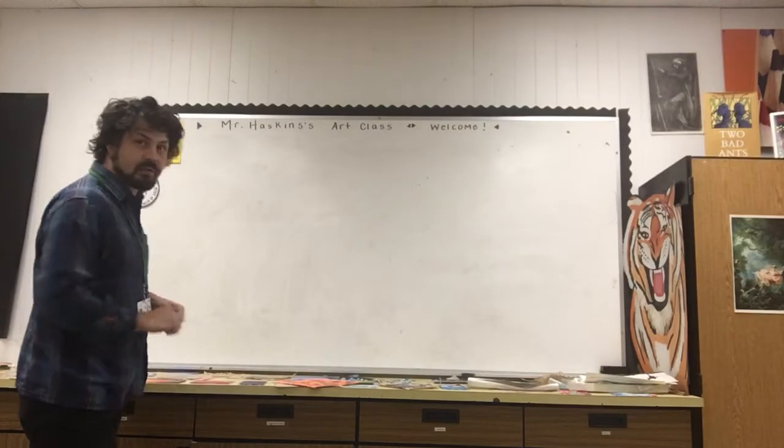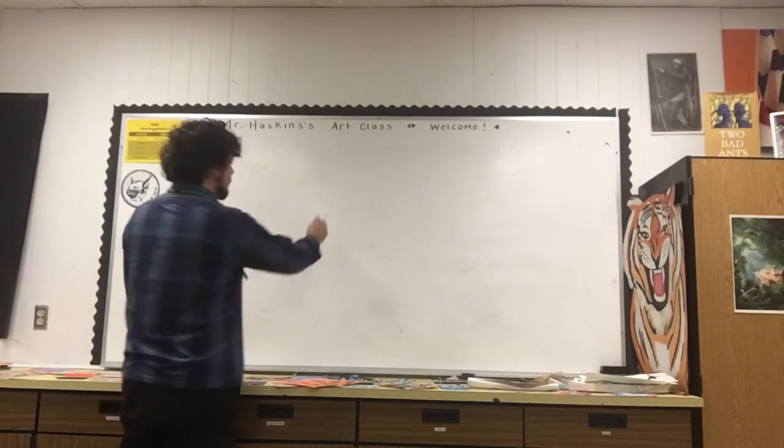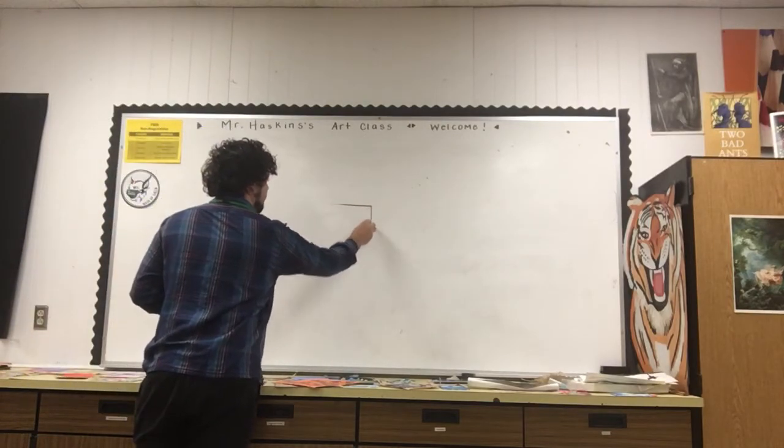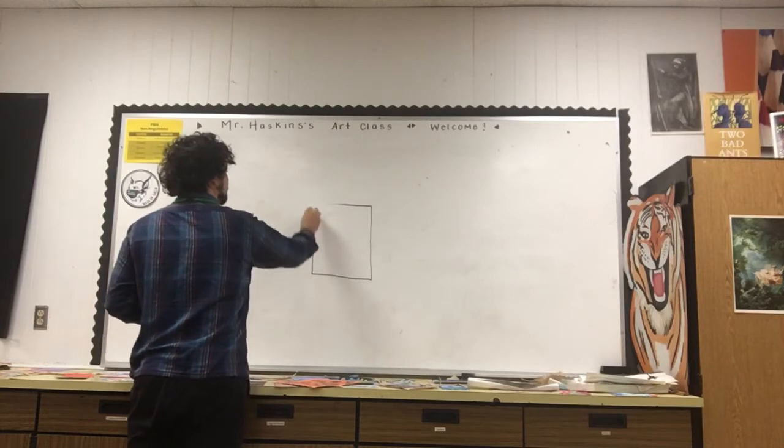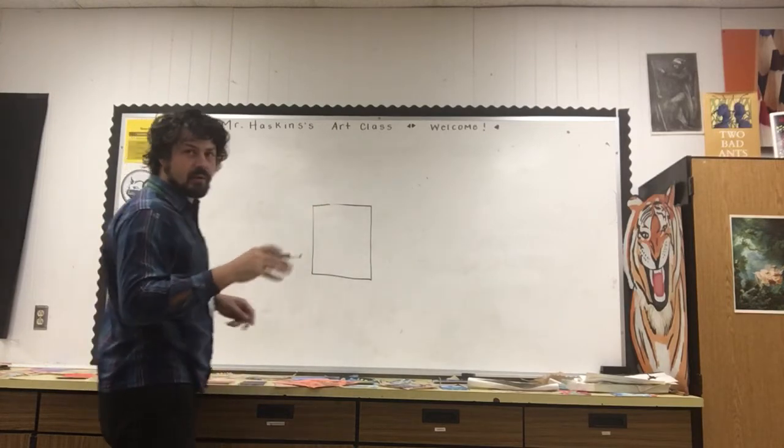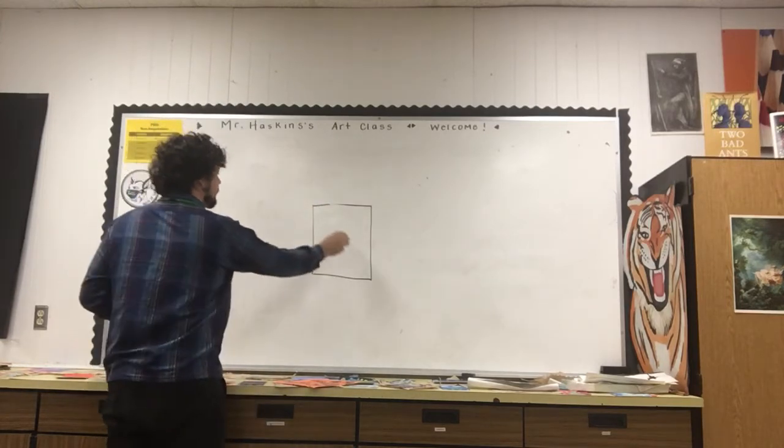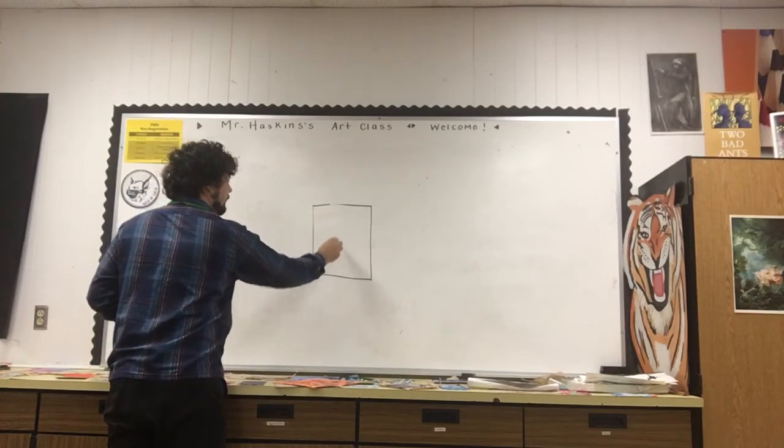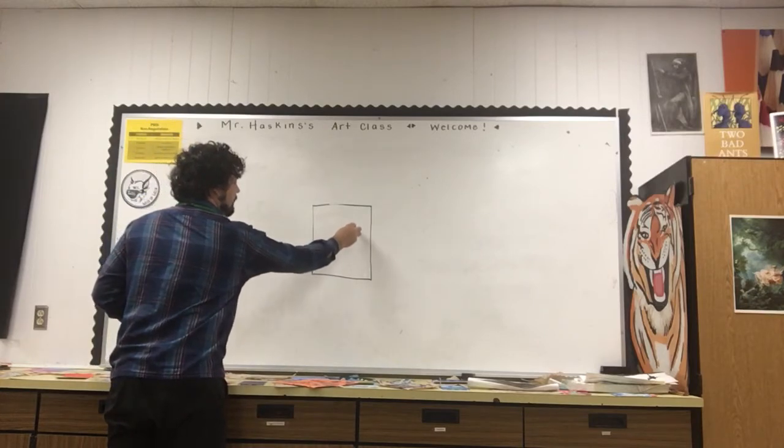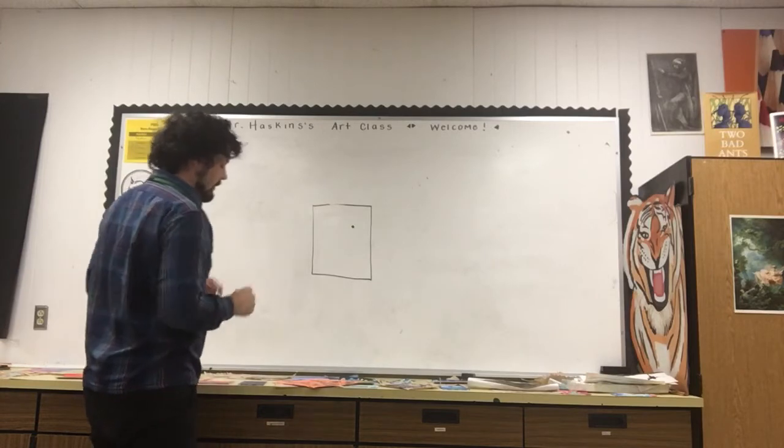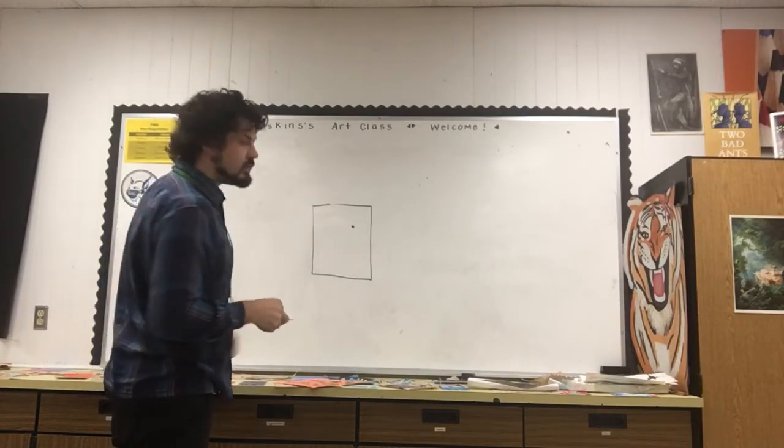But basically what we're going to do for this, we're going to take our paper, imagine this is my paper here, and I'm going to put a dot somewhere on my paper. It could be right in the middle, it could be off to the side. I'm going to put it up here just so it's not right in the middle, just be a little different.